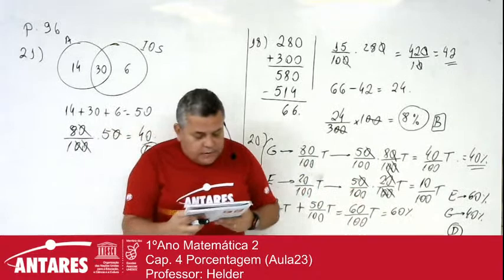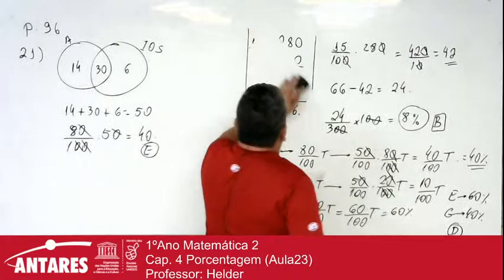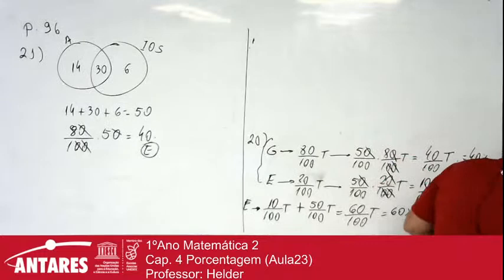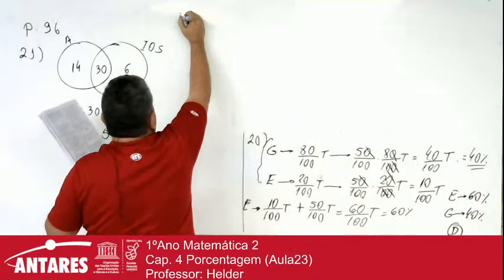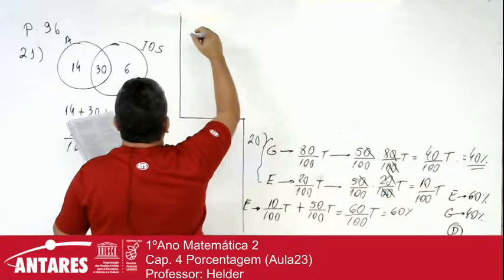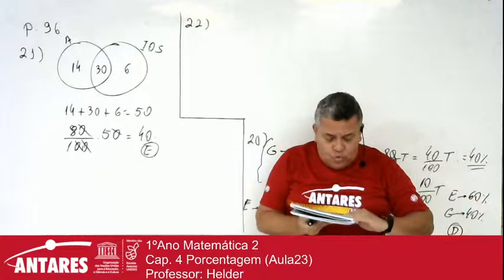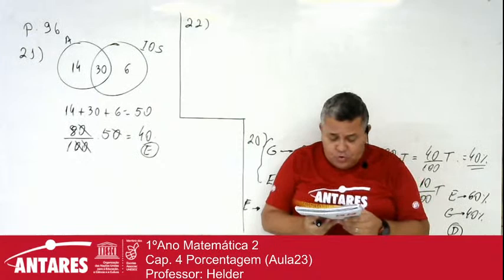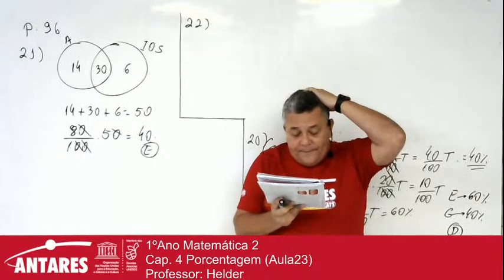Questão de número 22. Após fazer uma promoção de um clube de dança, o número de frequentadores de sexo masculino aumentou de 60 para 84. Apesar disso, o percentual de participação masculina passou de 30 para 24%. Considerando essas informações, é correto afirmar que o número de mulheres que frequentam esse clube após a promoção teve um aumento de quanto?